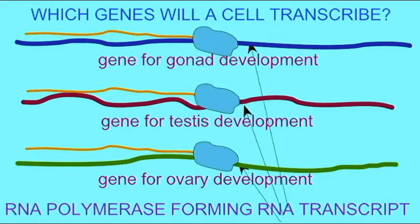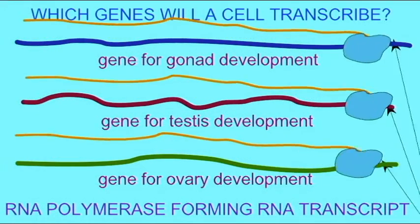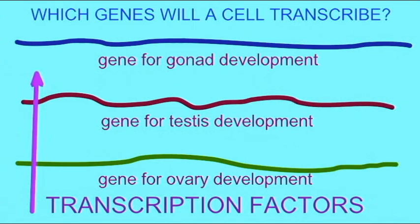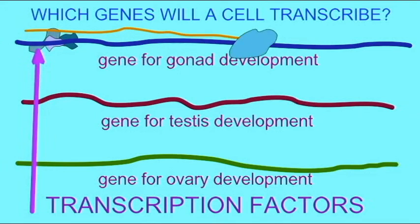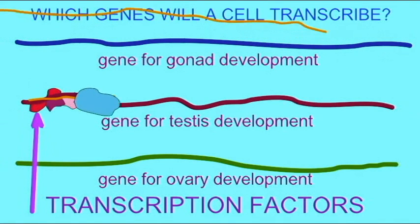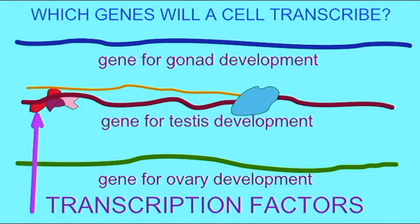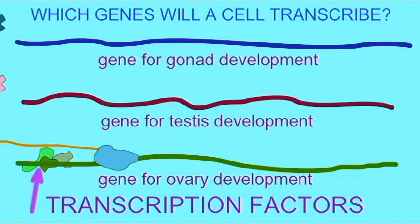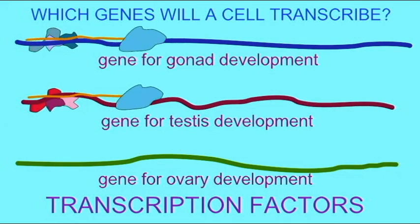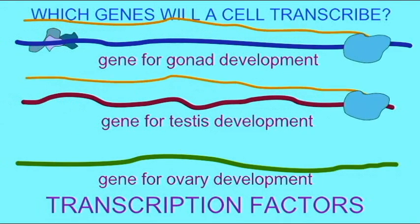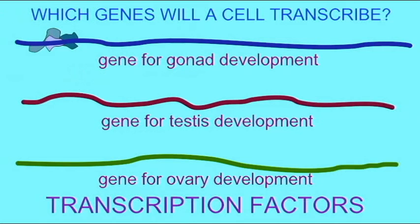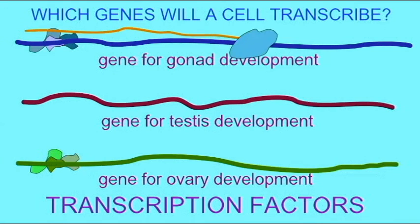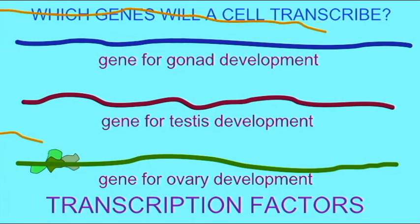The differentiation of embryonic cells is guided by genes known as transcription factors. These are known as the master switches of development because their proteins — the transcription factor proteins — bind to DNA and determine which genes are on or off. So while all cells may possess genes for gonad development, or specifically for ovarian or testicular development, these genes are turned off until they are turned on.